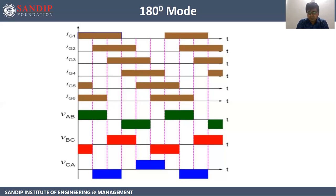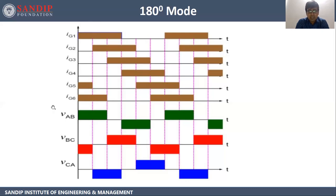Now let's look at how to calculate Vab, Vbc, and Vca. This calculation will be done mode by mode. Mode 1, mode 2, and mode 3 are each 60 degrees. In mode 1, thyristor 1, thyristor 5, and thyristor 6 are triggered — only three thyristors are on. Based on that, we will calculate the magnitudes of Vab, Vbc, and Vca.